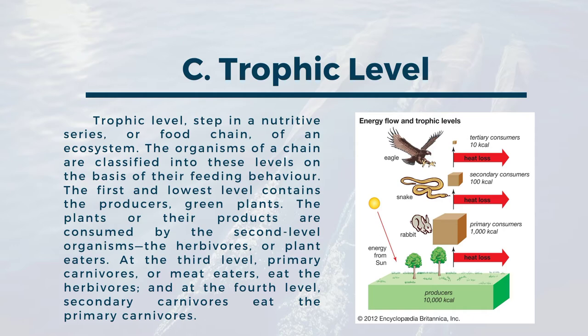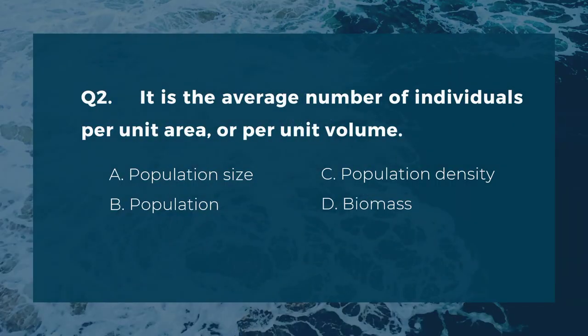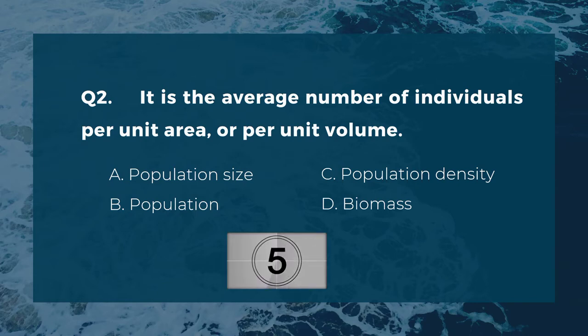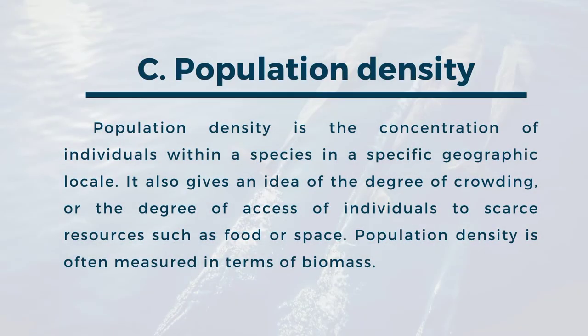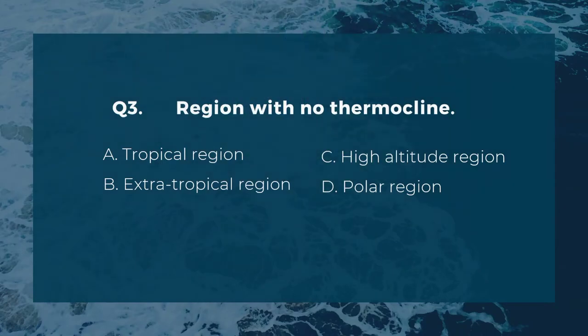The first and lowest level contains the producers — green plants. The plants or their products are consumed by the second level organisms, the herbivores or plant eaters. At the third level, primary carnivores eat the herbivores, and at the fourth level, secondary carnivores eat the primary carnivores. Question two: it is the average number of individuals per unit area or per unit volume. A) population size, B) population, C) population density, D) biomass. The answer is C, population density — the concentration of individuals within a species in a specific geographic locale.